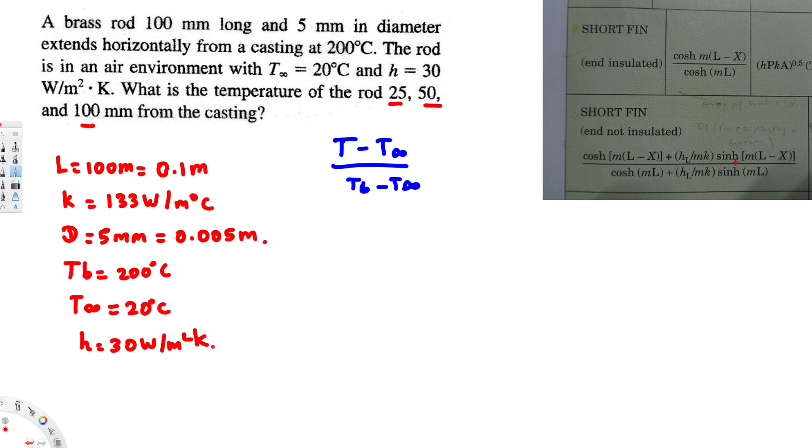When we apply this last one, L minus x is going to be zero. For cosine hyperbolic that's going to be one, for sine hyperbolic it's going to make this zero.